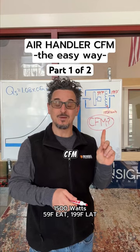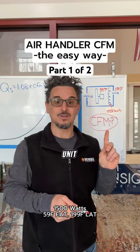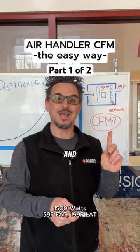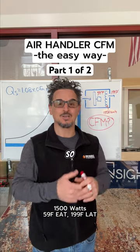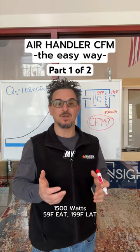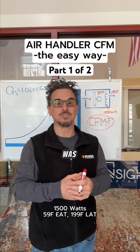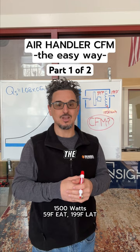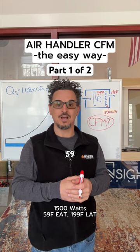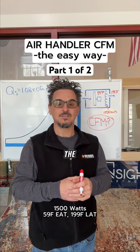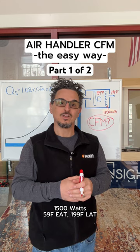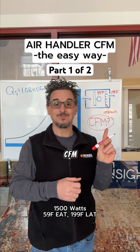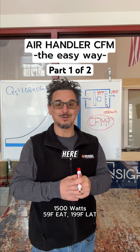Did you know you can calculate the CFM of any air handling unit, provided you know the electric heater KW and the Delta T across that heater? Yesterday we looked at the smaller unit heater in my basement, which was a 1500-watt heater. The air entering the heating coil is 59 degrees and leaving the heating coil is 199 degrees. How many CFM was that fan doing on the unit heater?